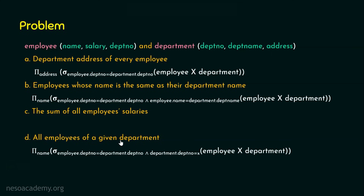Coming to option D: all employees of a given department. We want all employee names of a given department, where the department is provided by the user — I'll represent it as x. We perform the Cartesian product to get the complete tuples from both relations combined. Then we select rows where the employee's department number equals the department table's department number, ensuring that employee information (name, salary, department number) is correctly matched with the corresponding department information (department number, department name, address).